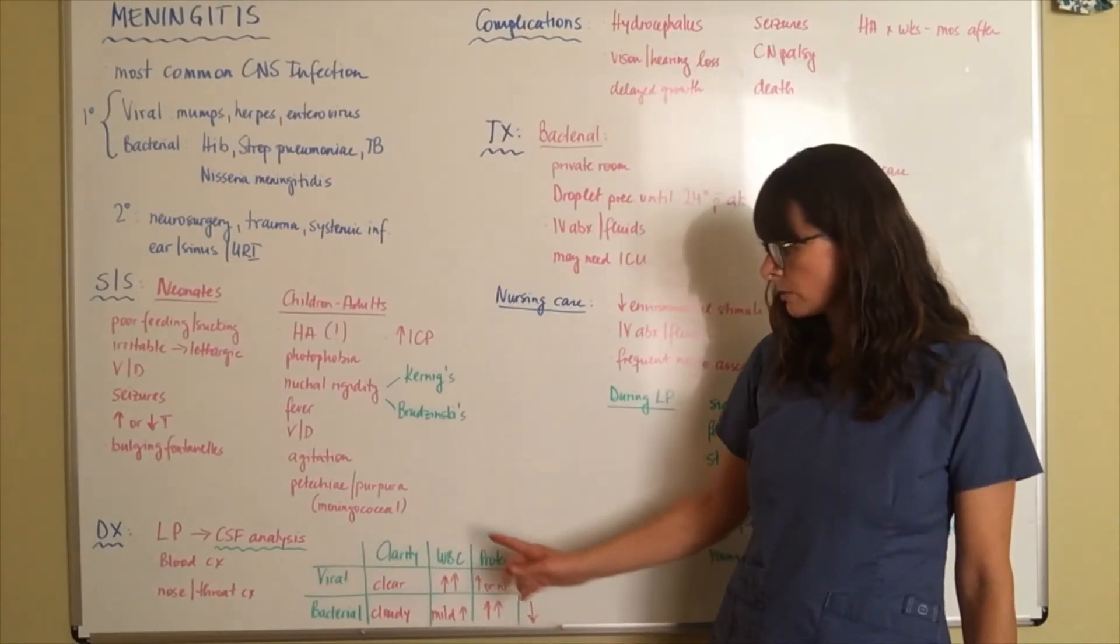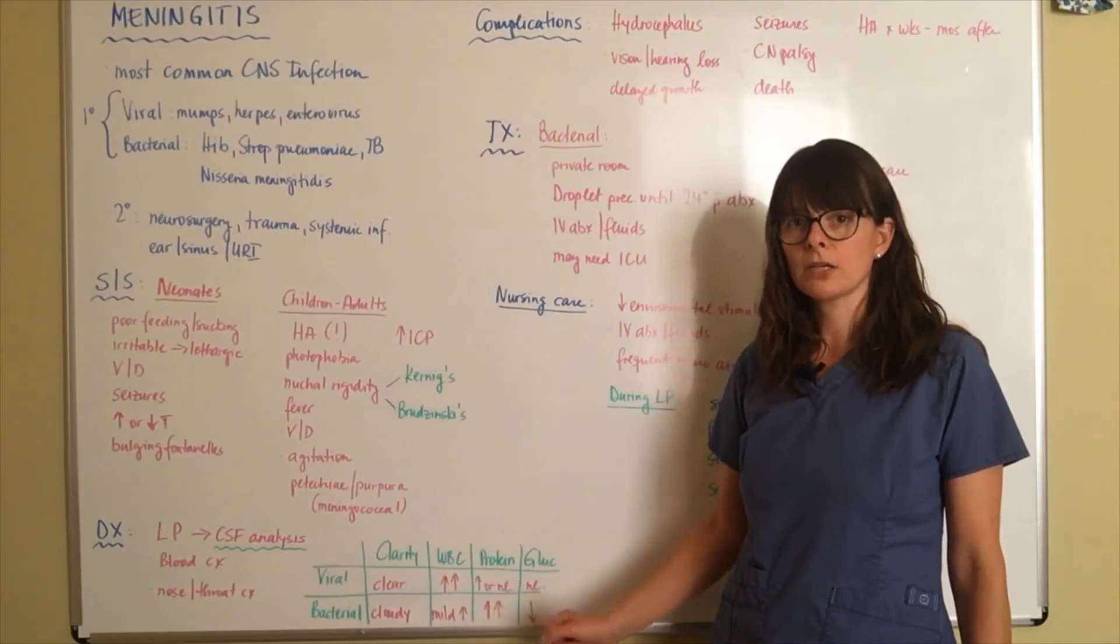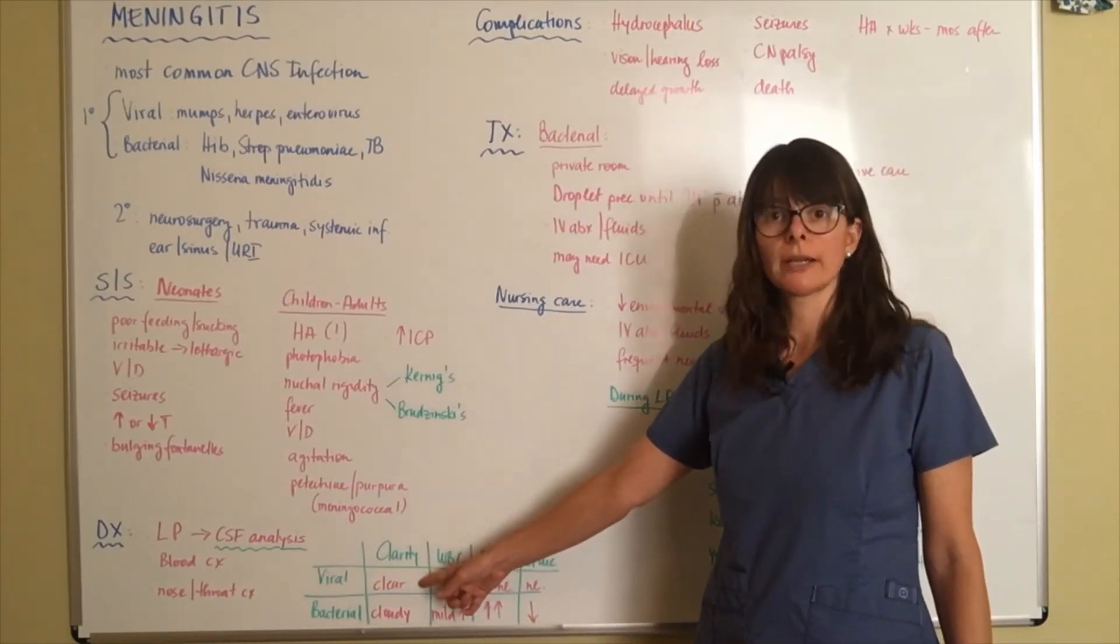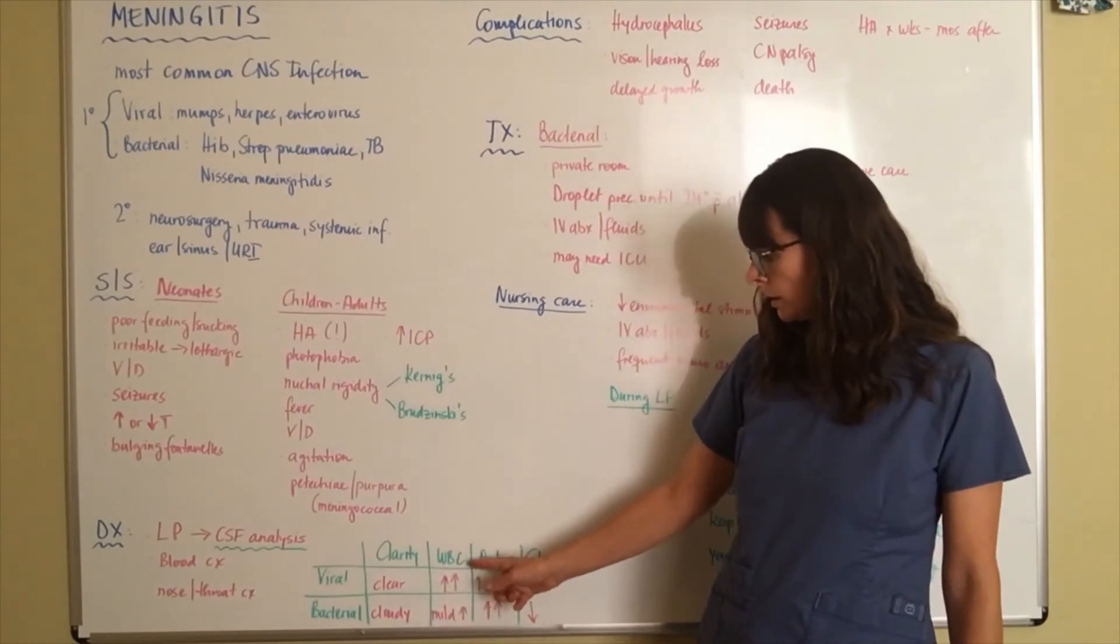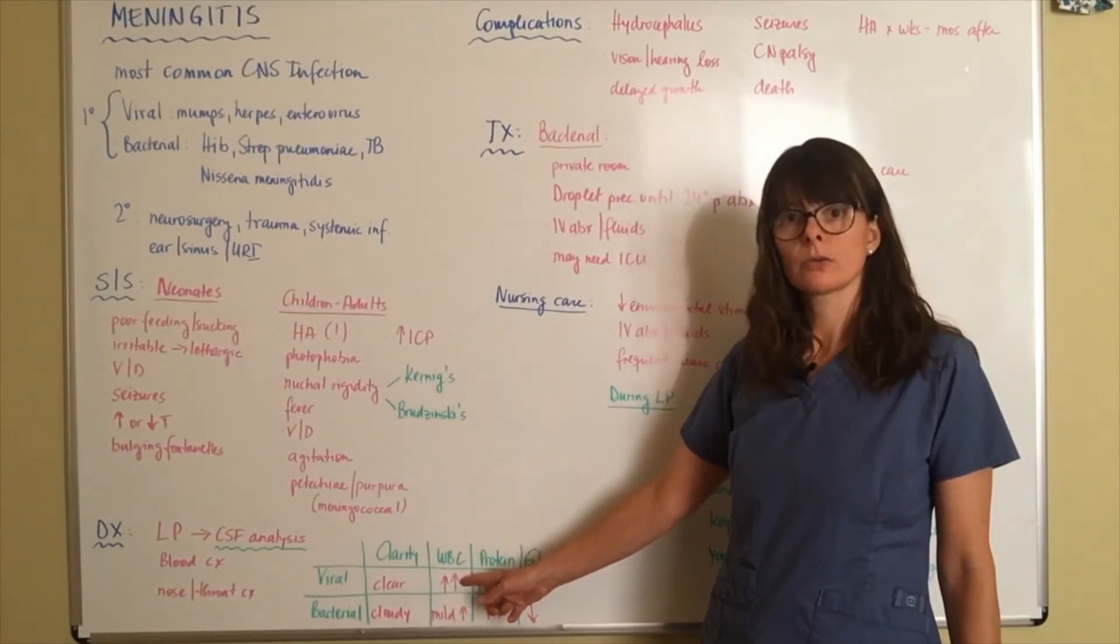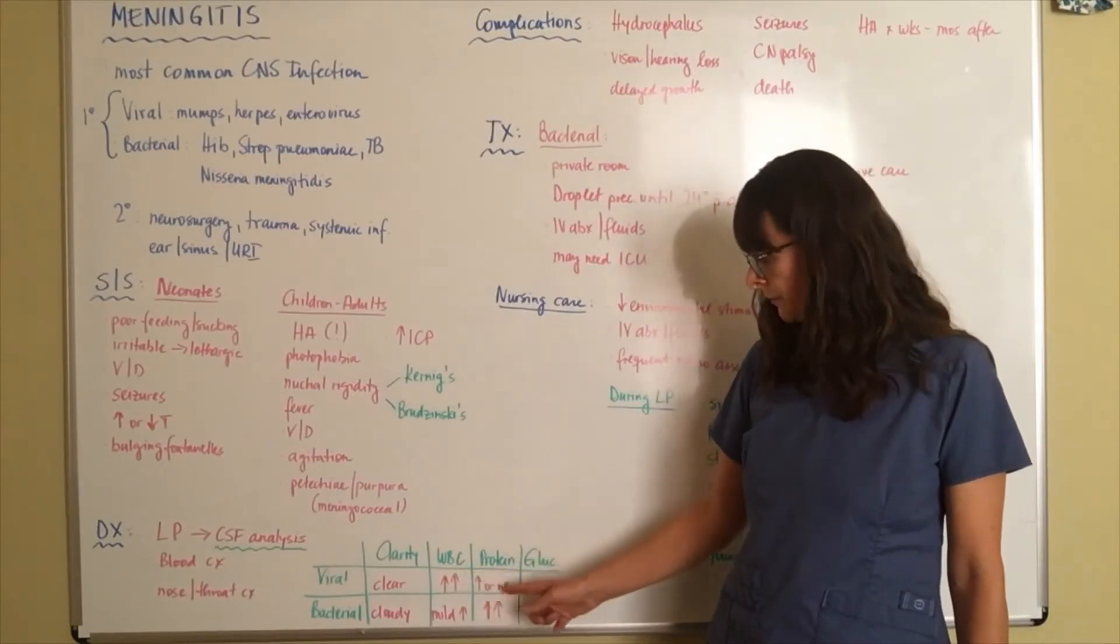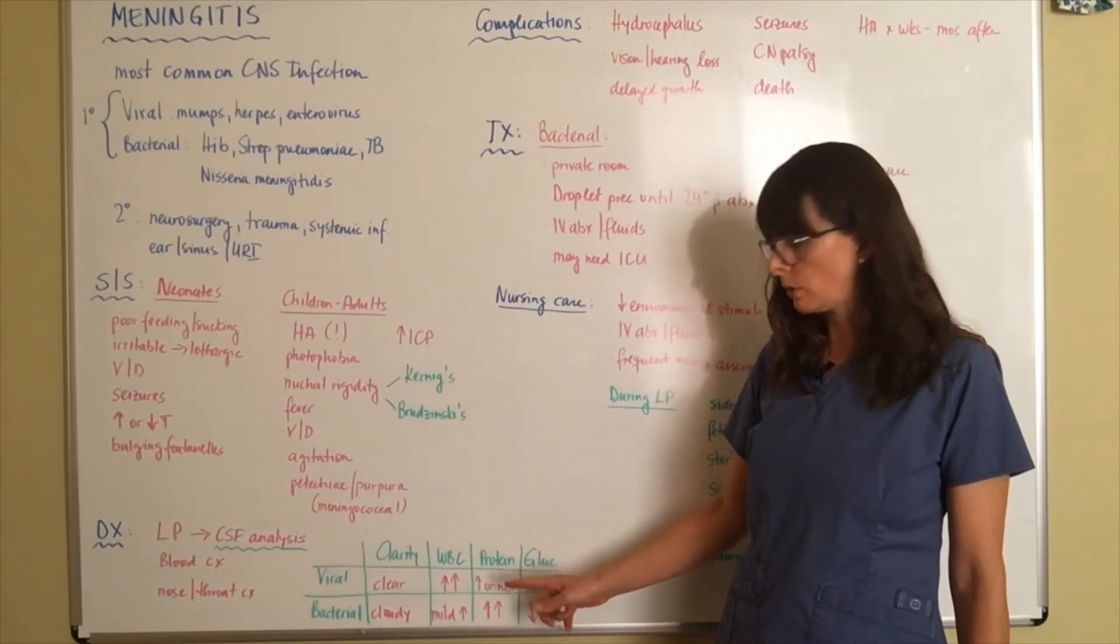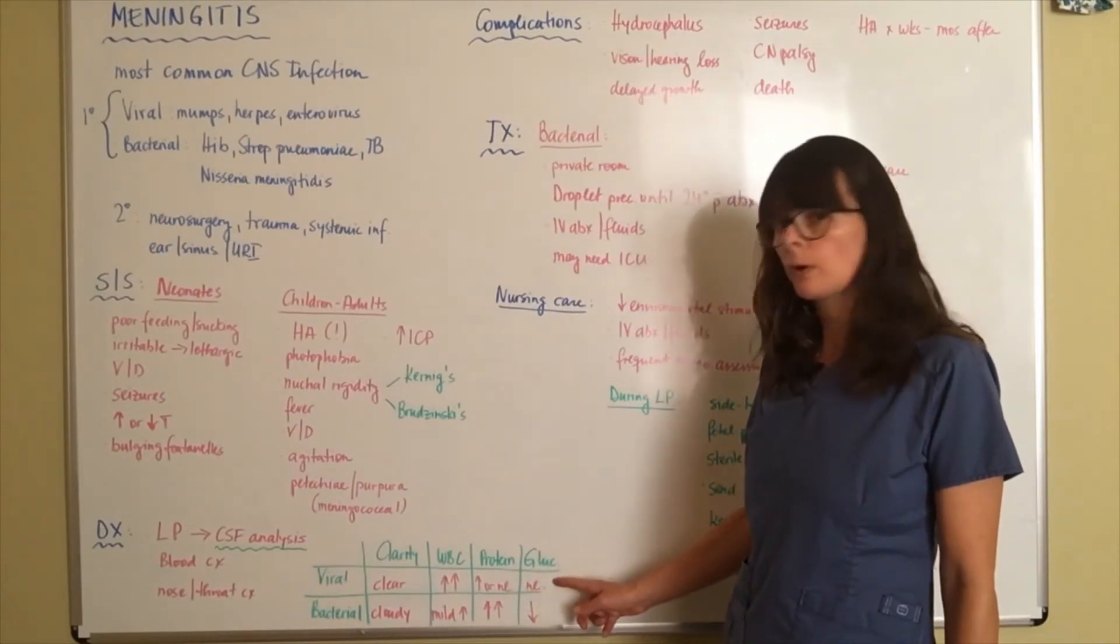Once that fluid is retrieved from the patient's lumbar spine, we can look at that and there will be differences whether it's viral or bacterial in cause. When it's viral it will be clear. That fluid will be clear. The white count when we get the results back from the lab will be extremely elevated. Protein levels might be slightly increased or normal and glucose levels will be normal.